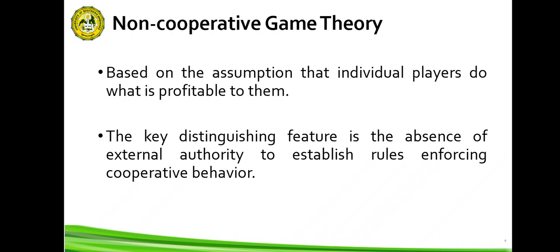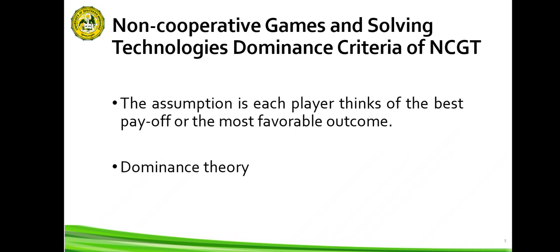Next is non-cooperative games and solving technology's dominance criteria. In non-cooperative game theory, the assumption is that each player thinks of the best payoff or most favorable outcome. The strategy where a player gains the most favorable outcome irrespective of the other player's strategy is called dominance theory. Dominance could be strict dominance or weak dominance.